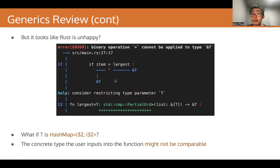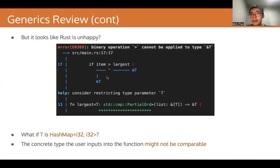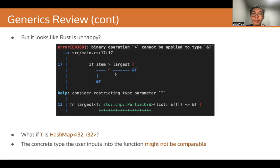But as you also saw in the generics lecture, it looks like Rust is unhappy with our code. Specifically, we have an error with our comparison operator. Here we are assuming that our generic type T is comparable — maybe it's some type i32 or char, as in the case of the two functions we looked at. But if T is something like a HashMap, then T would not be comparable, so that would be an error. The error is basically that the concrete type the user inputs to the function might not be comparable, and so this operator will not be valid.